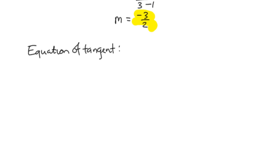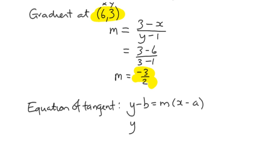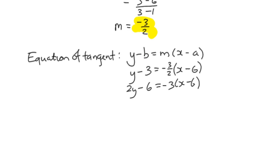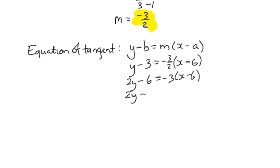It takes the form y minus b equals m times x minus a because we've got the information that we've needed. The point is 6, 3 and the gradient is negative 3 over 2, so it becomes y minus 3 equals negative 3 over 2 multiplied by x minus 6, which can multiply both sides by 2, which gets rid of the fraction. 2y minus 6 equals negative 3x plus 18.